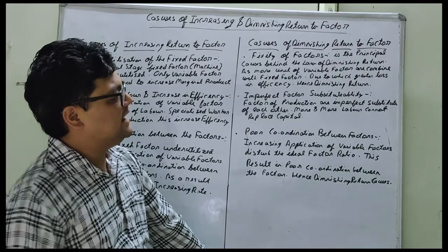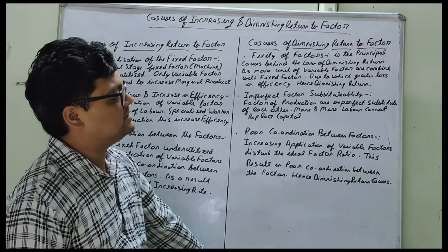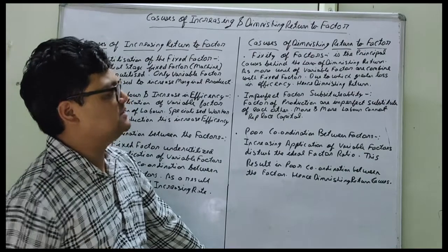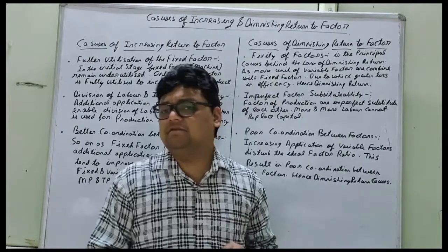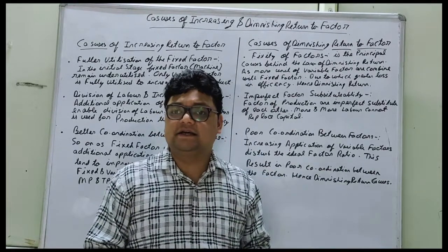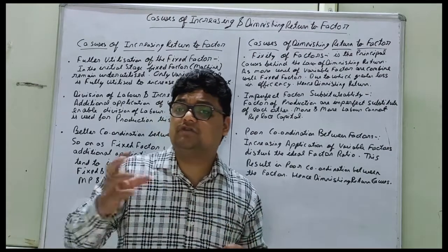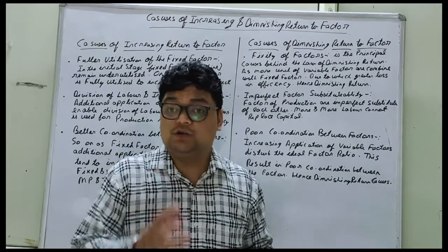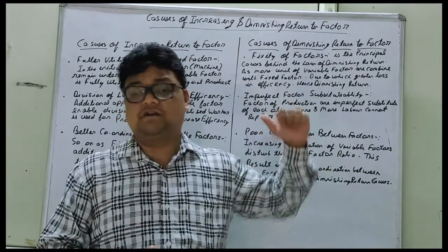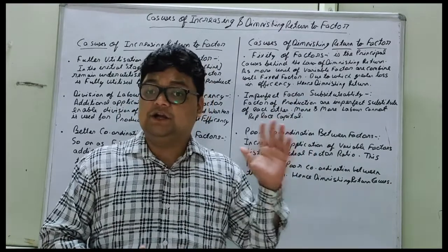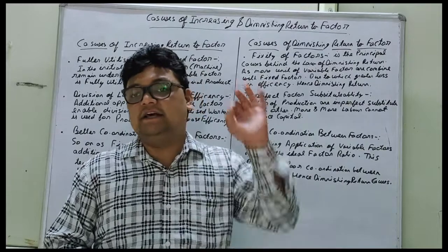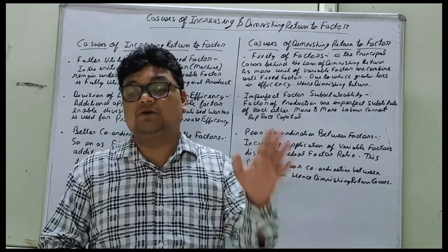The first and principal cause is fixity of factor. As more and more units of variable factor are combined with the fixed factor, there is a greater loss in efficiency, hence diminishing returns. When more and more variable factors or laborers are utilized, there will always be underutilization of capital or fixed factor. Due to this, marginal product goes on diminishing, total product increases at a diminishing rate, and eventually total product begins to decline.